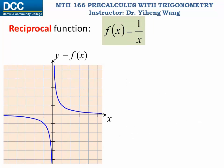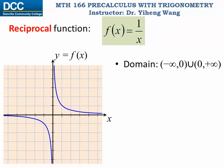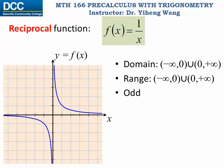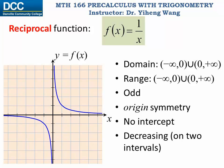Lastly, we have the reciprocal function f(x) equals 1 over x. Because x is in the denominator, the function is undefined when x equals 0. Therefore the domain is all real numbers except 0, which can be written as the union of two sets: from negative infinity to 0, and from 0 to positive infinity. The range is the same — the function value can never be 0. This function is an odd function, symmetric about the origin. As you can see from the graph, it has no intercepts and is always decreasing, but on two separate intervals since the function is not continuous.